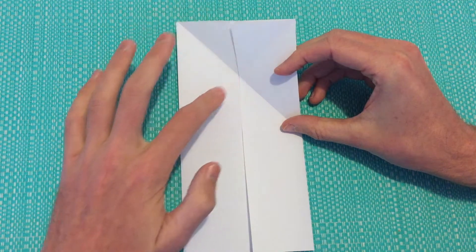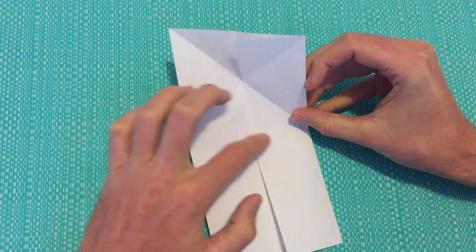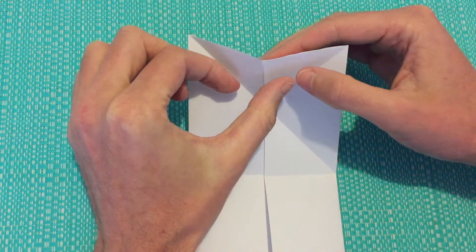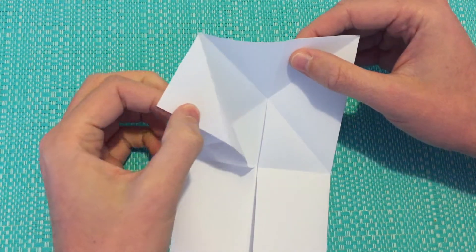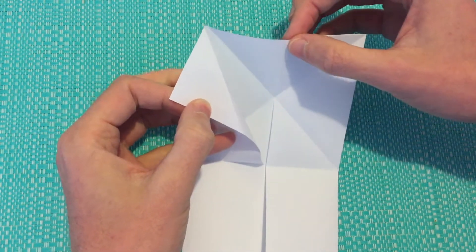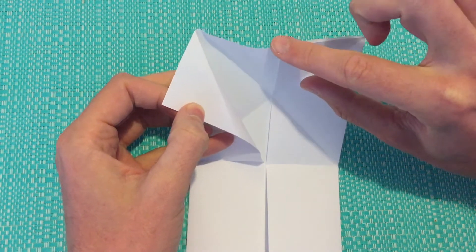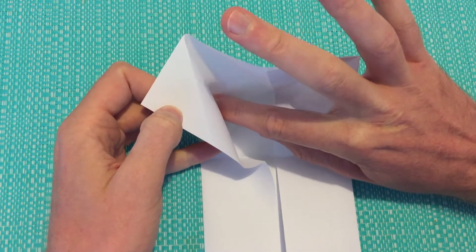Now we should have creases going both ways as well as a crease right down the middle. Next we're going to open up our left-hand flap, we're going to be holding the middle at the top, we're going to be bringing this point underneath.